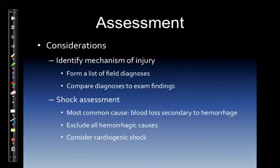Assessment considerations: identify the mechanism of injury, form a list of field diagnoses, then compare those diagnoses to your exam findings. You will either eliminate or suspect conditions based on evidence the patient provides. For shock assessment, the most common cause is blood loss secondary to hemorrhage. Exclude all hemorrhagic causes and consider a cardiogenic cause — the heart may be unable to pump due to injury or possible cardiac tamponade. Both tamponade and tension pneumothorax can cause PEA: the monitor looks normal but there is no actual cardiac output. Closing pulse pressures are a sign of cardiac tamponade; tracheal deviation is a later sign of tension pneumothorax.